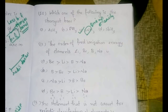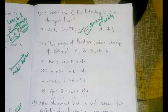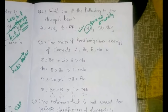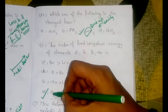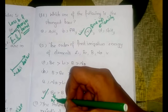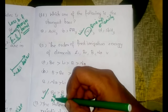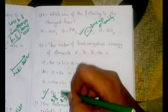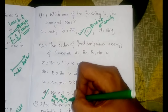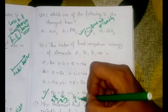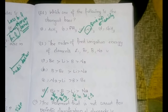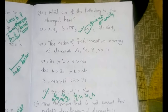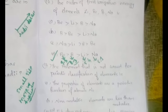The twelfth question: the order of first ionization energy of lithium, beryllium, boron and sodium is? The answer is option D: beryllium greater than boron greater than lithium greater than sodium. The experimental values are 9.3 eV for beryllium, 8.3 for boron, 5.4 for lithium and 5.1 for sodium, which gives exactly that order.